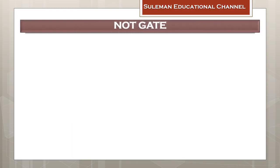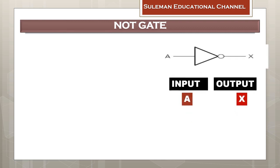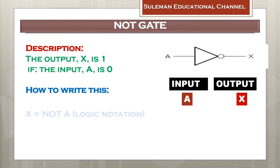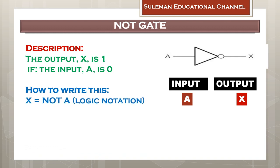Now we will discuss about the NOT gate. In the NOT gate there is one input A and one output X. If the input is one then the output will be zero; if the input is zero then the output will be one. We write the NOT gate as X equals NOT A, where X is the output and A is the input.